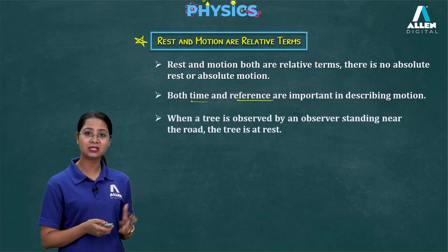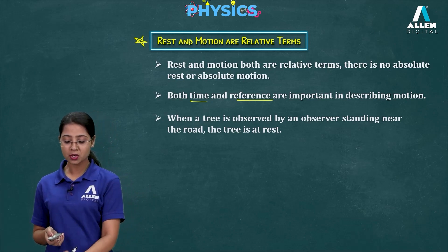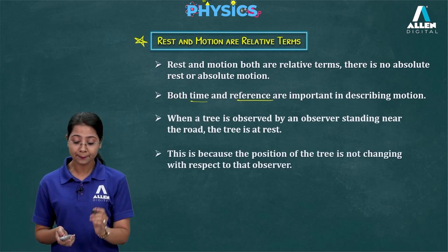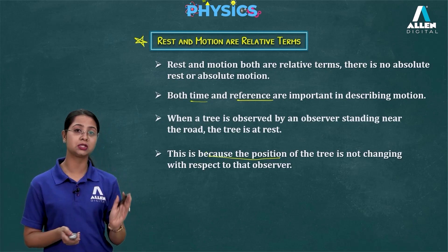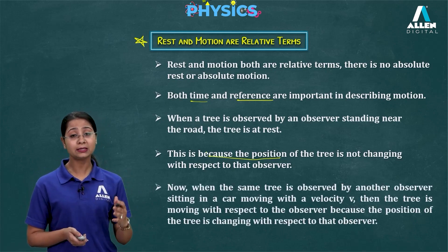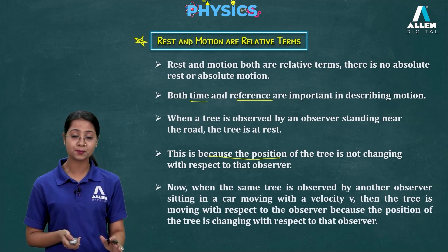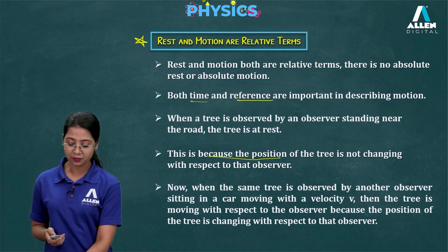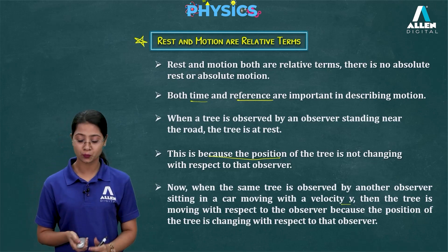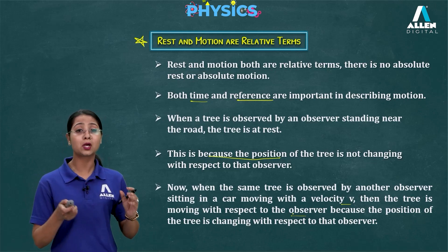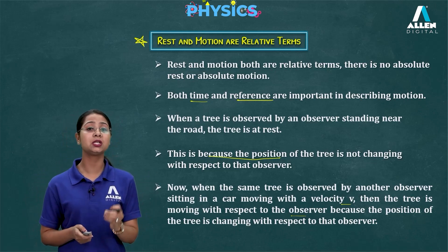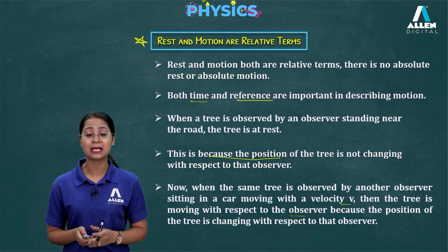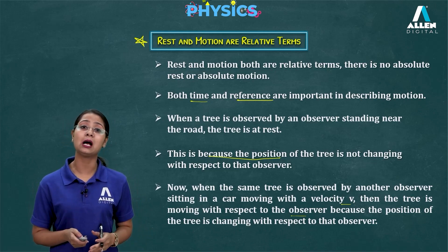When a tree is observed by an observer standing near the road, the tree is at rest — there is no change in position of the tree. But when the same tree is observed by another observer who is sitting in a moving car with velocity V, the tree is in motion with respect to that observer because the position of the tree is changing with respect to that person. That is why we say rest and motion are both relative terms.